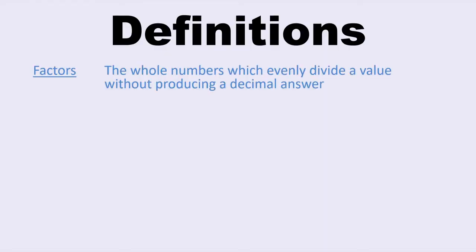First of all, let's start with some definitions, and you're going to want to write these down. Factors are whole numbers which evenly divide a value without producing a decimal answer. For example, the factors of 6 are 1, 2, 3, and 6, because we can divide 6 by any of these values and we get a whole number answer.